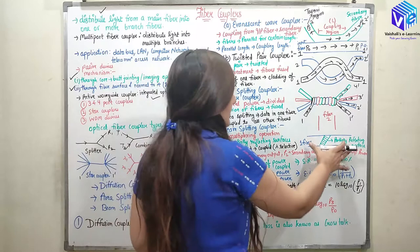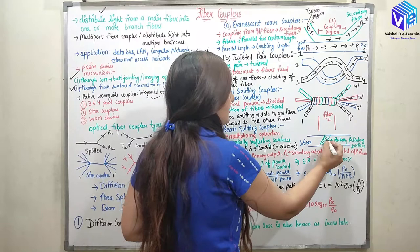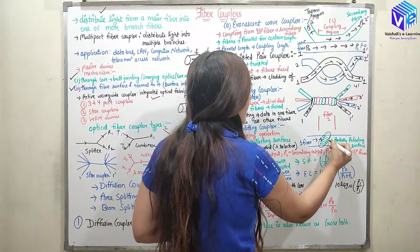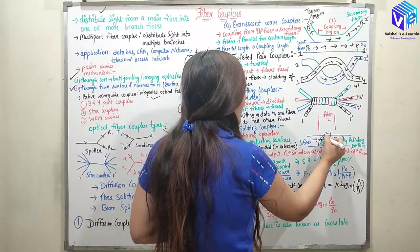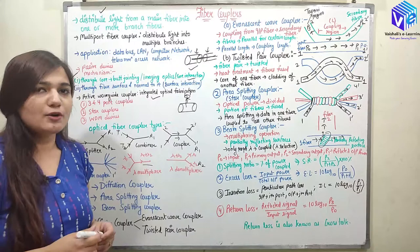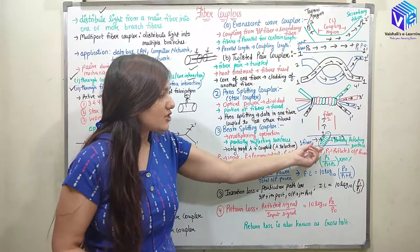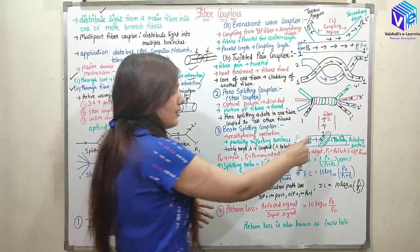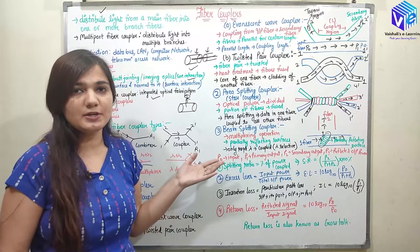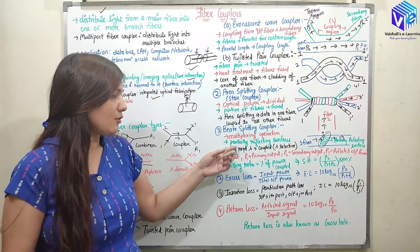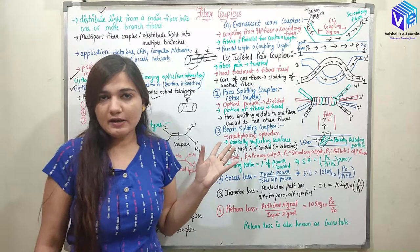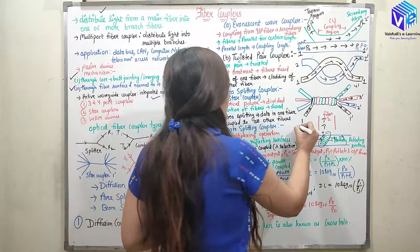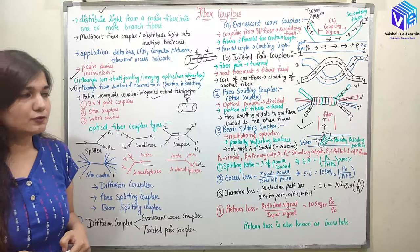In the beam splitting coupler, we split the beam using a partially reflecting surface (shown in green) placed in the primary fiber. When light travels through the primary fiber and hits the partially reflecting surface, some of the light reflects into fiber 2 as well — this is how coupling to fiber 2 is achieved. It is used for multiplexing operations. Only some wavelengths are coupled, making it wavelength selective coupling, so the beam splitting coupler is wavelength selective.